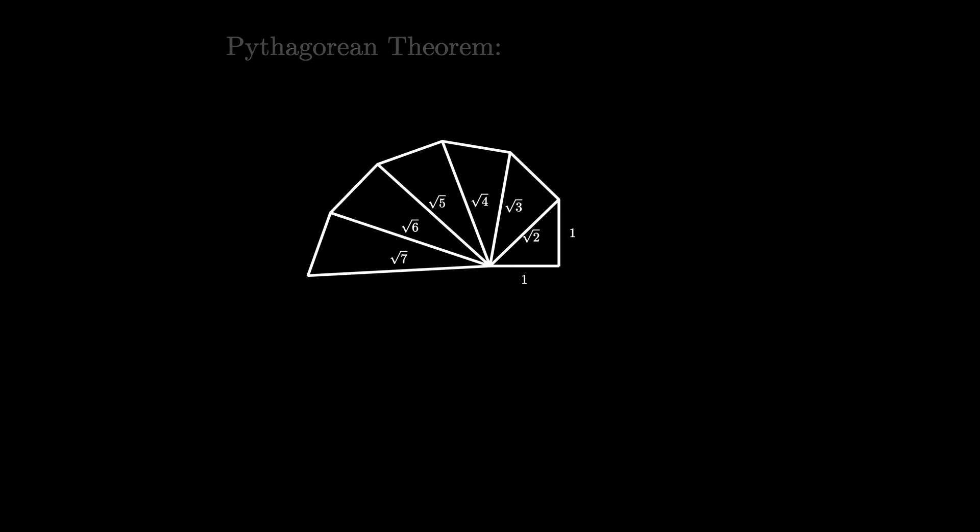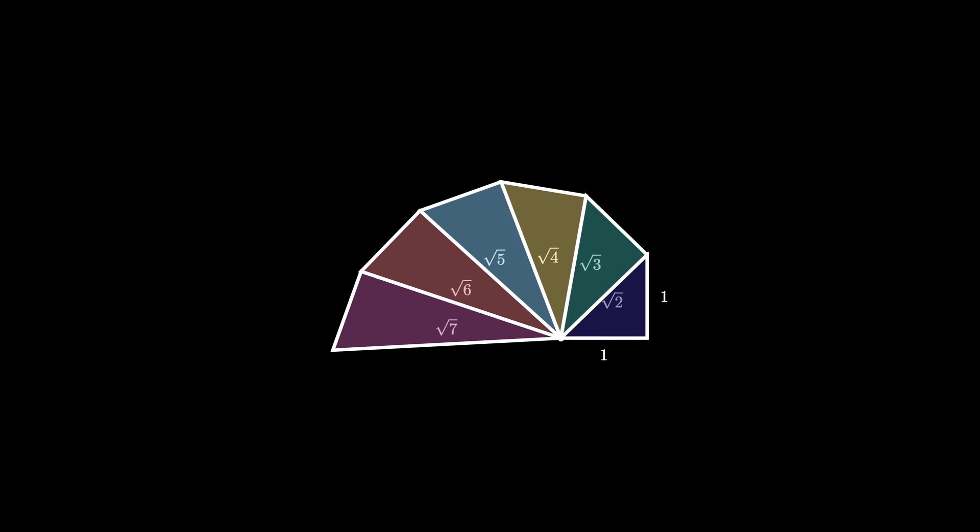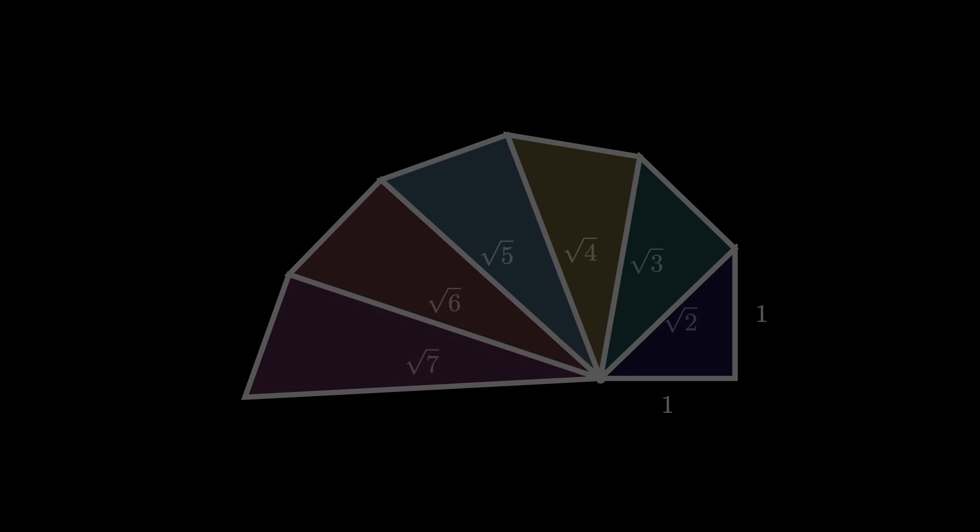How far can we take this process? Can we just keep going forever? The object shown here is the first six stages of the Spiral of Theodorus.